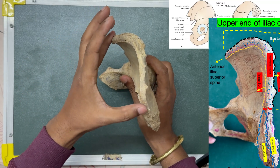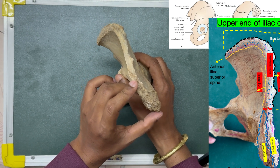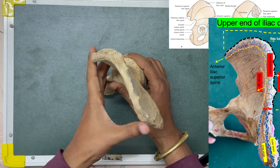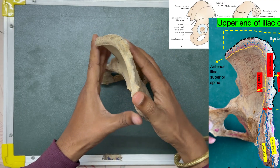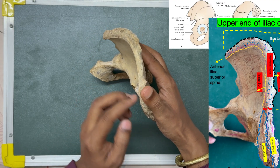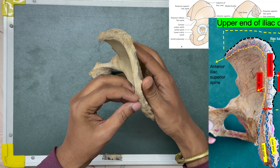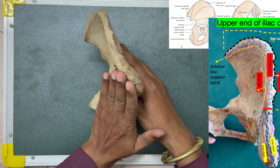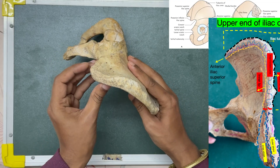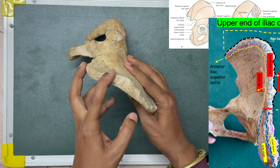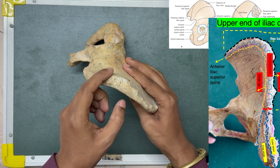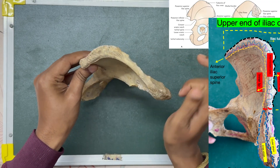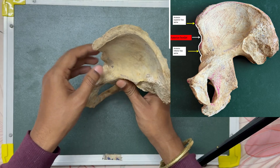The iliac crest is divided into two halves: the ventral two-thirds and the dorsal one-third. The ventral two-thirds consists of an outer lip, an inner lip, and an intermediate area between them. The dorsal one-third is divided into outer slope and inner slope. About five centimeters behind the anterior superior iliac spine, there is a tubercle of the iliac crest.